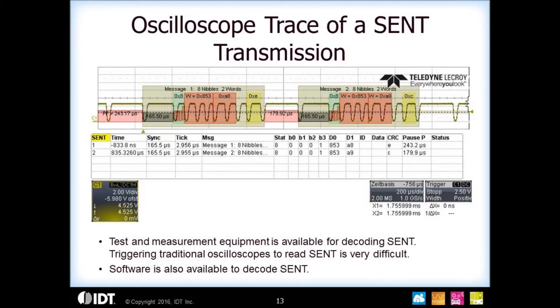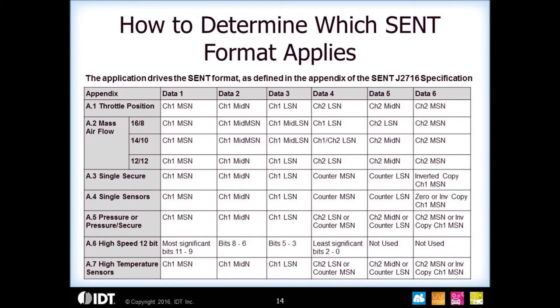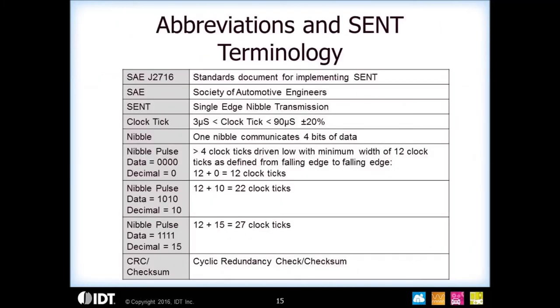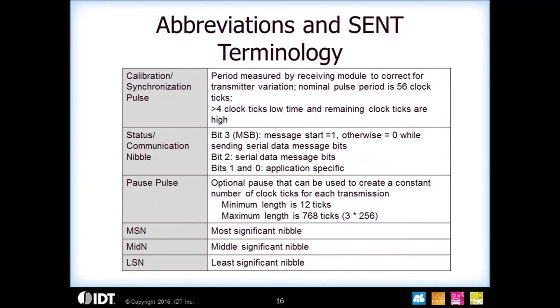Regarding the SENT format: when the original J2716 specification was written, the format was defined based on application. So how the data comes out depends on your application — whether it's throttle position, mass airflow, pressure, or high temperature sensing. A table is included showing the different formats for bringing out the data. In some cases there are two channels; in other cases there's a single 12-bit channel, whether it's the standard format or the single secure message.